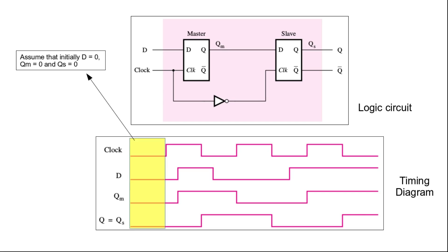In this timing diagram, we assume that initially D is 0, QM is 0, and QS is 0. QM is the Q output of the master D latch, and QS is the Q output of the slave D latch. The Q output of the flip-flop is the same as QS, so Q equals QS.